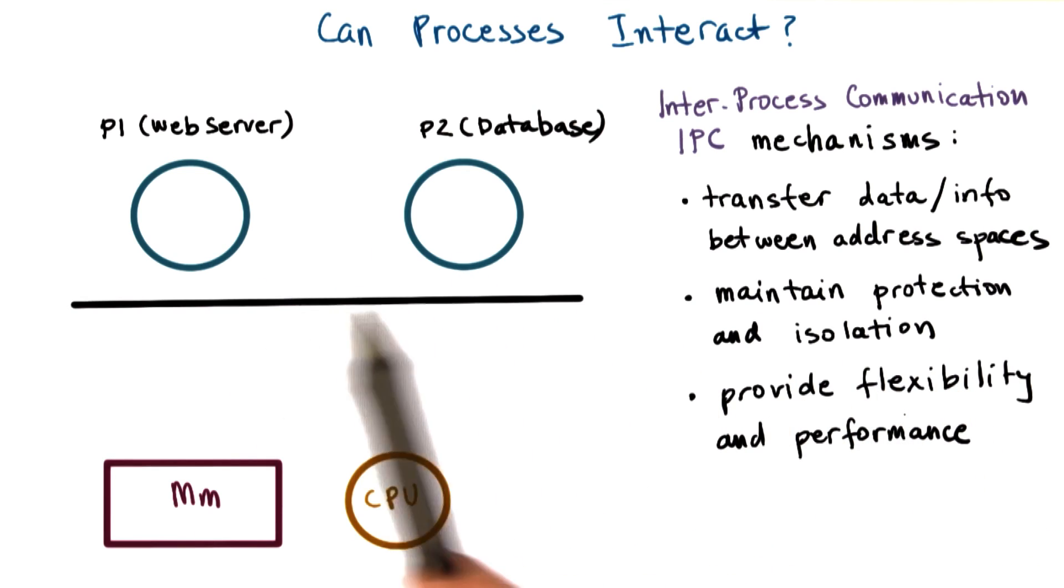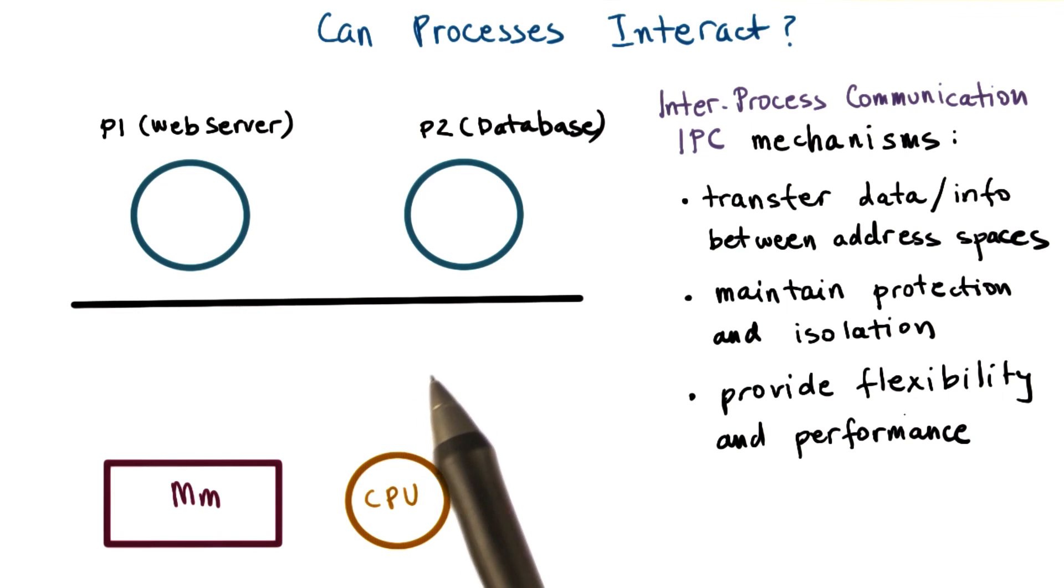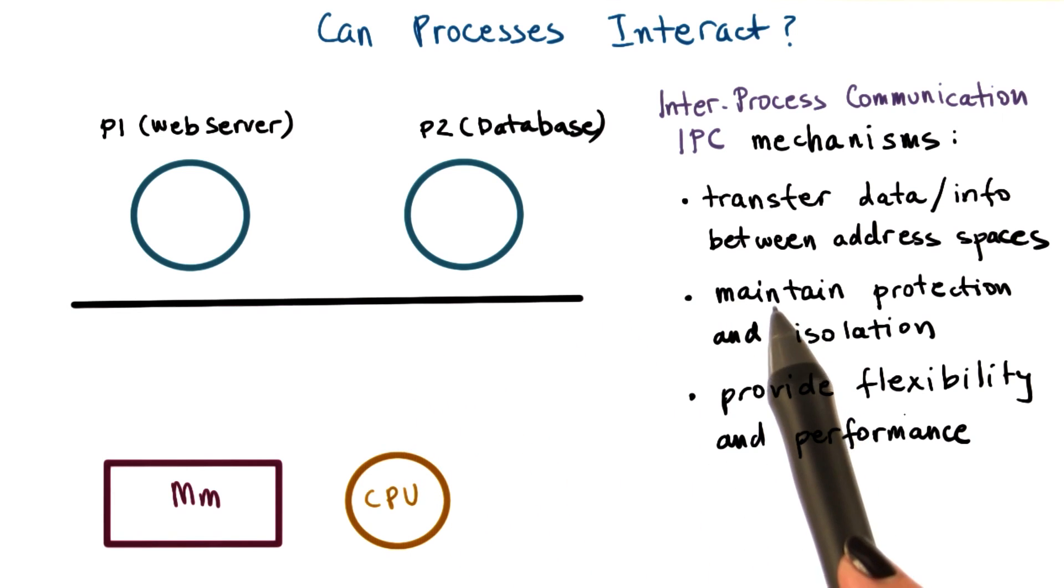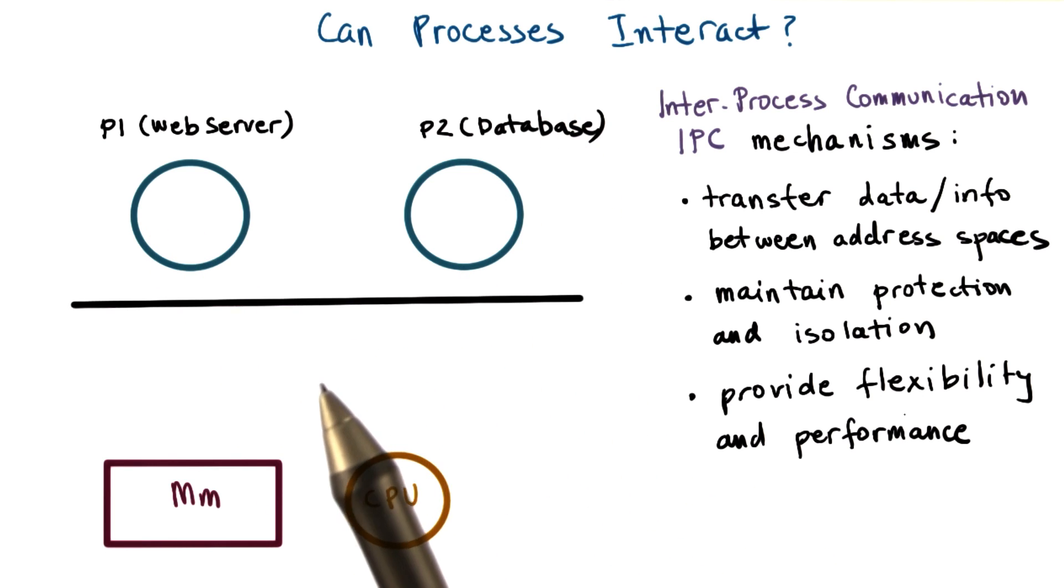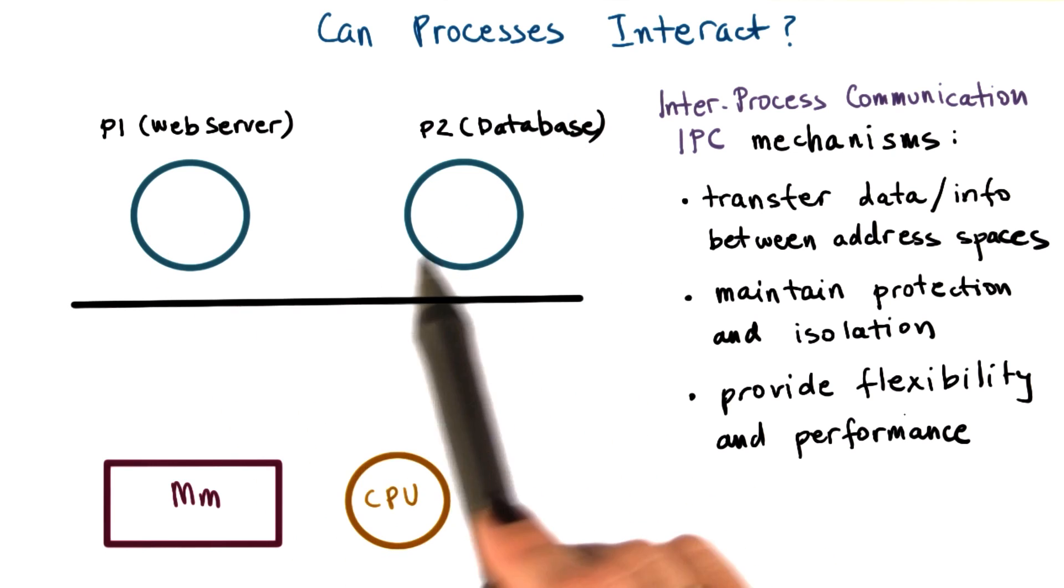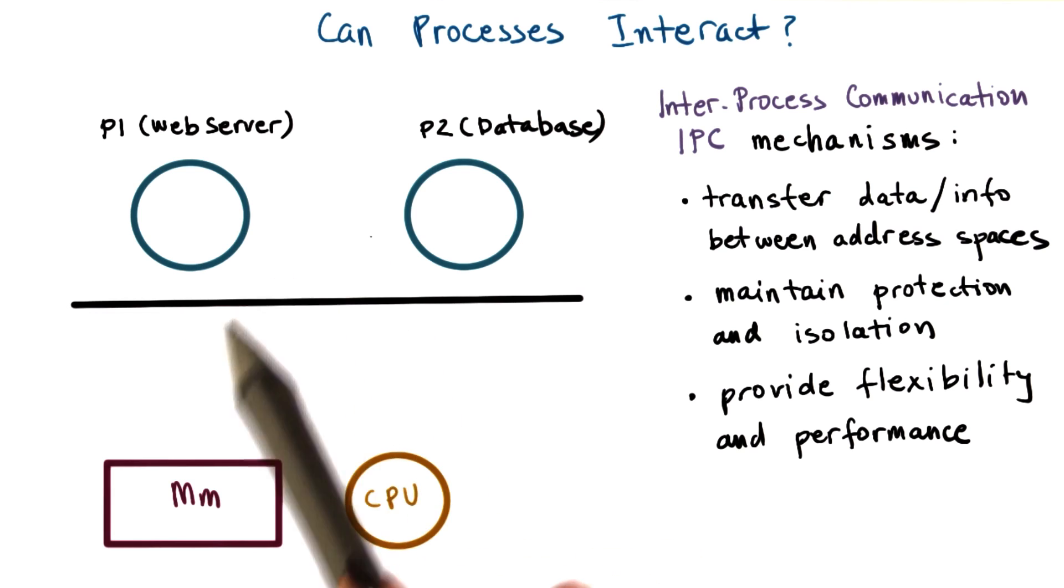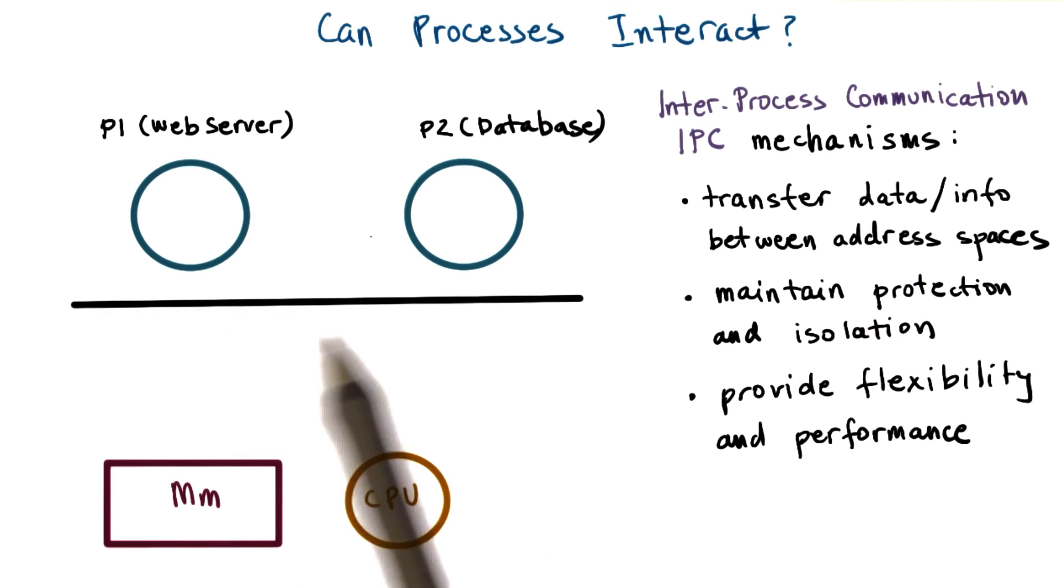Also, different types of interactions between processes may exhibit different properties. Periodic data exchanges, continuous stream of data flowing between the processes, or coordinated update to some shared single piece of information. Because of all these differences, IPC mechanisms need to provide flexibility as well as performance.